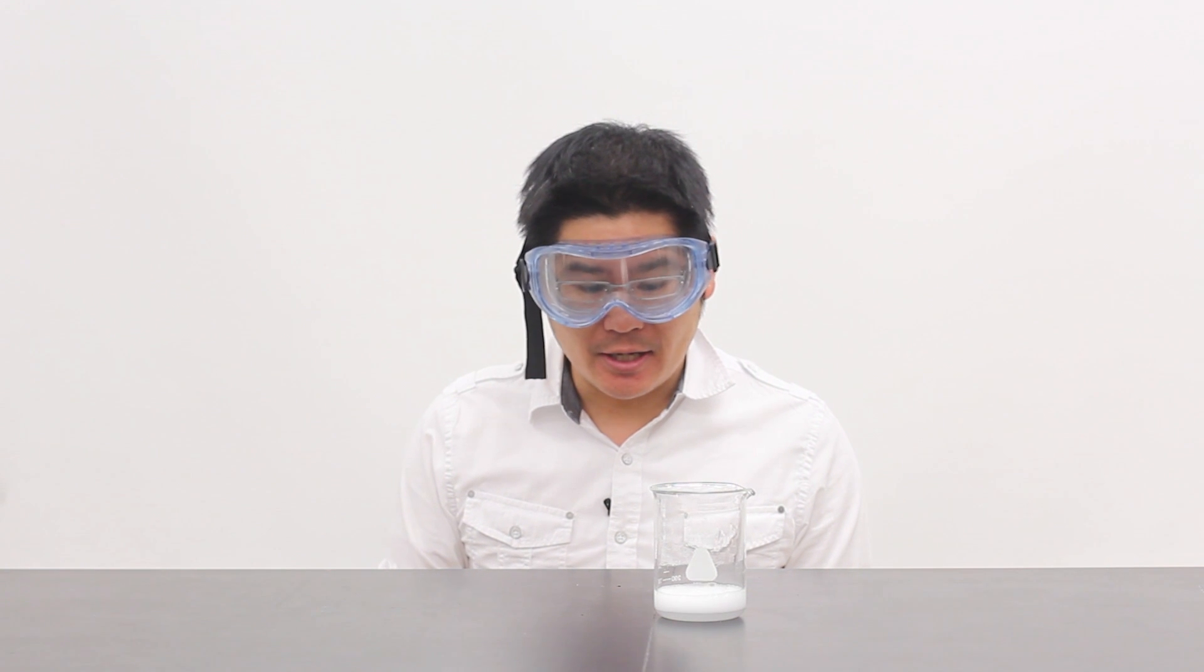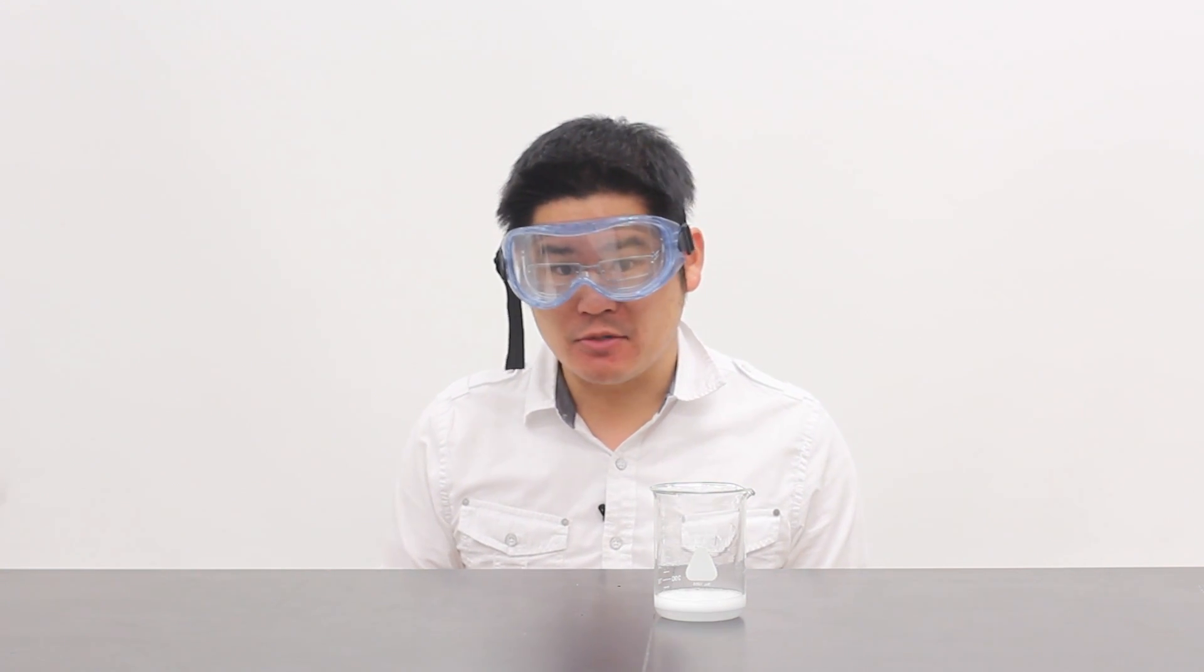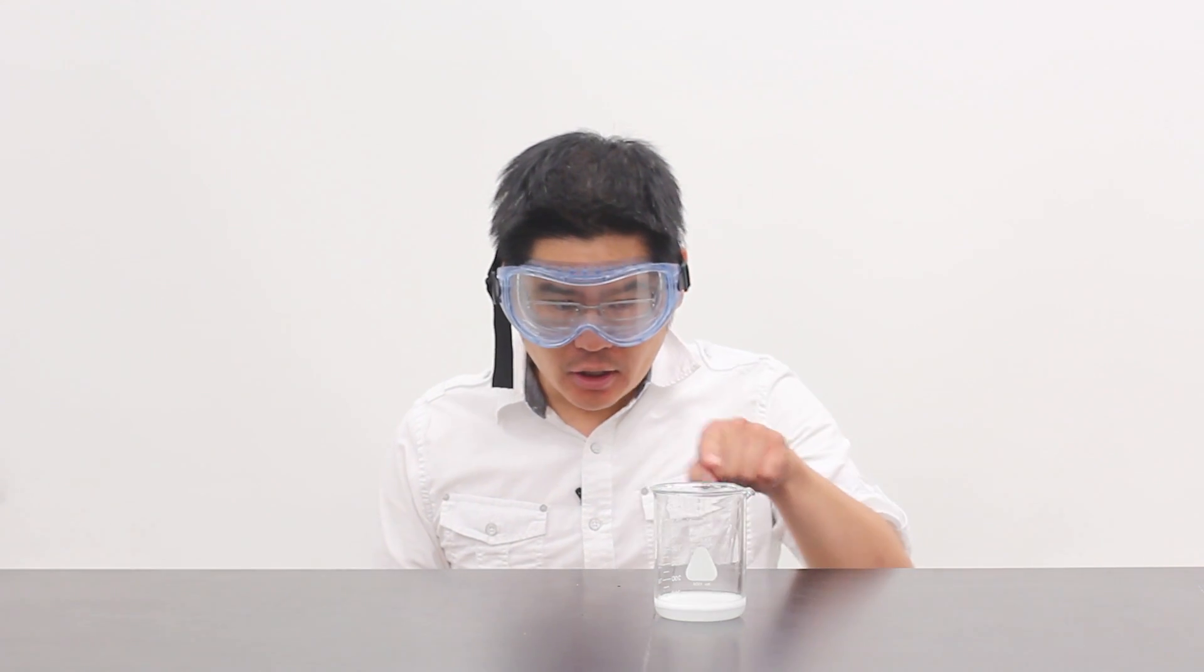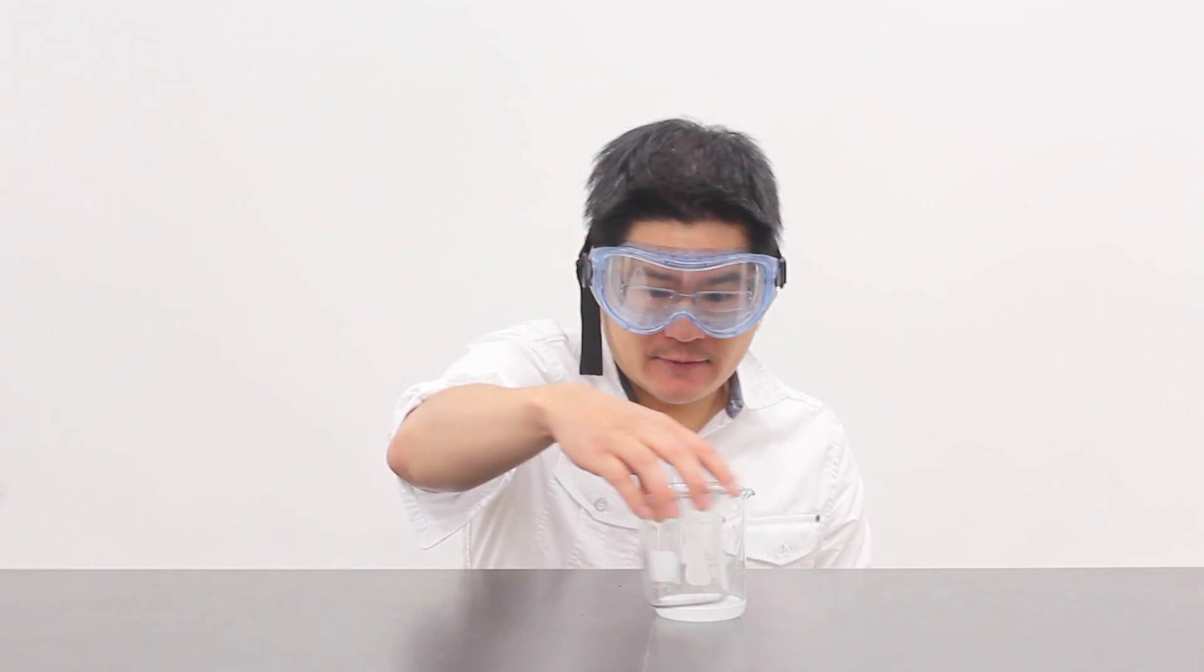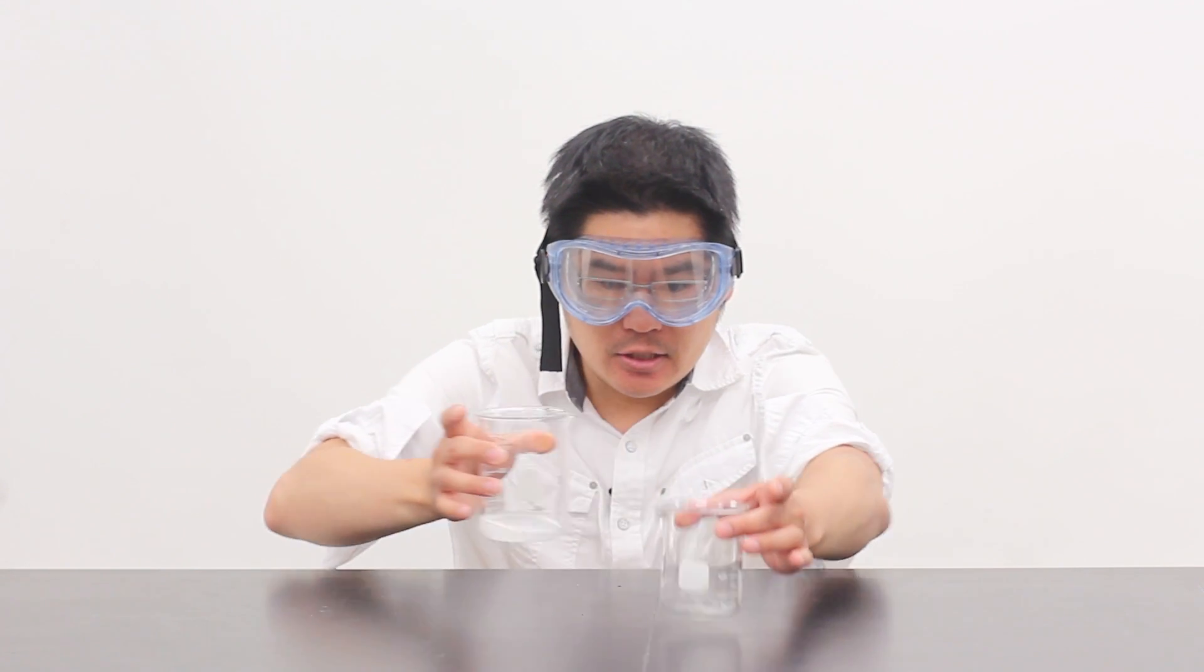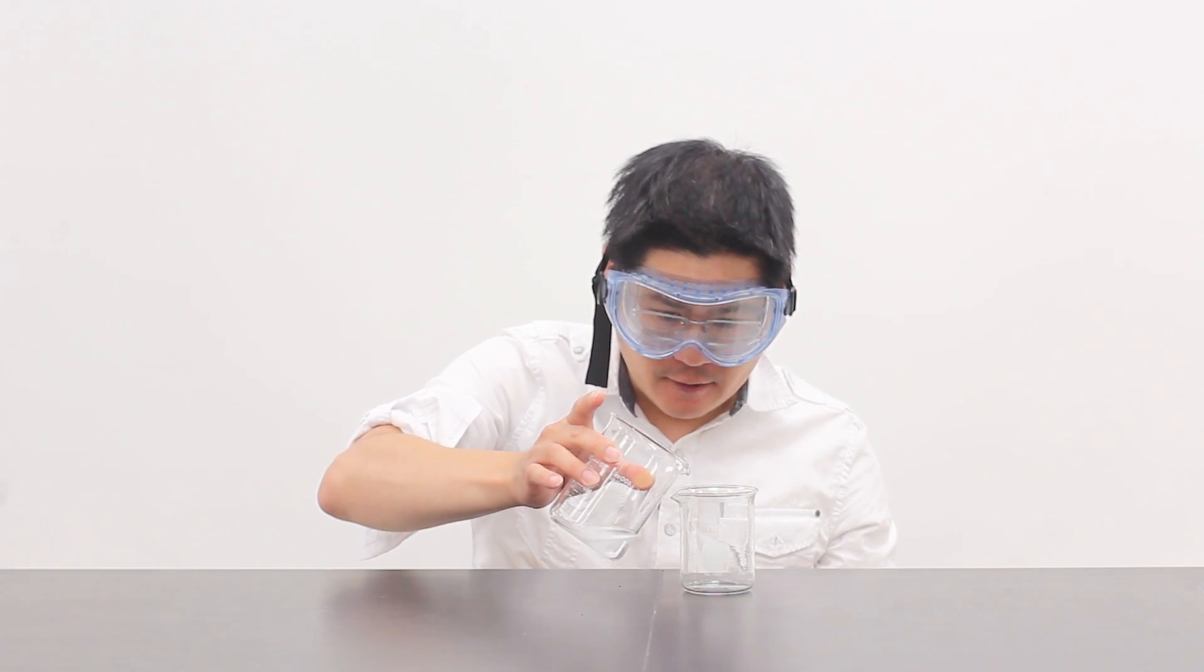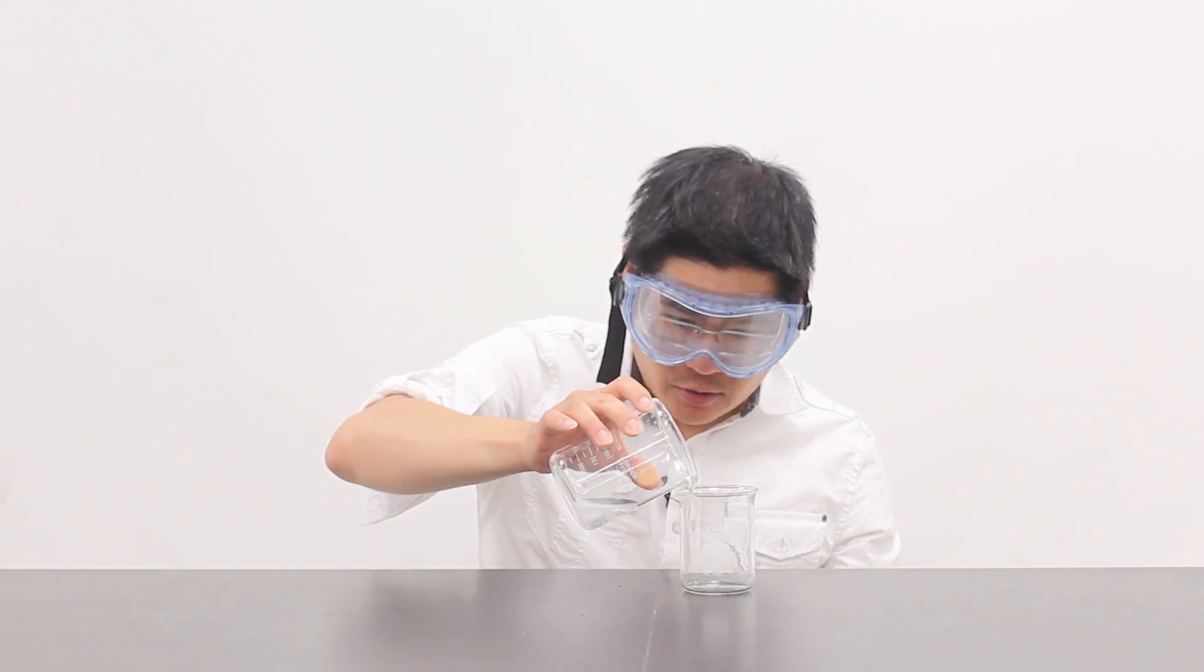Now, carbon dioxide is actually a gas that's more dense than regular atmospheric air. In other words, all that carbon dioxide is actually staying inside the cup right now. So I can actually pour this invisible carbon dioxide into a separate beaker and fill it up with carbon dioxide.